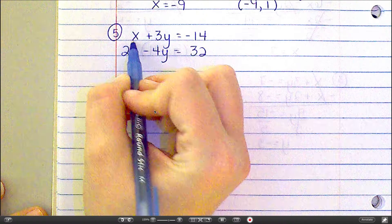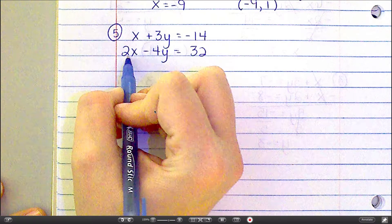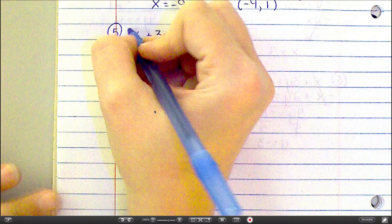So I want this x to become a negative 2x to cancel out with that one. That means I'm going to have to multiply this entire equation by negative 2.